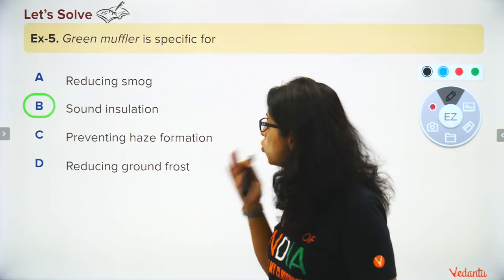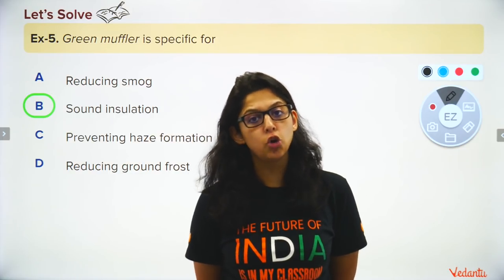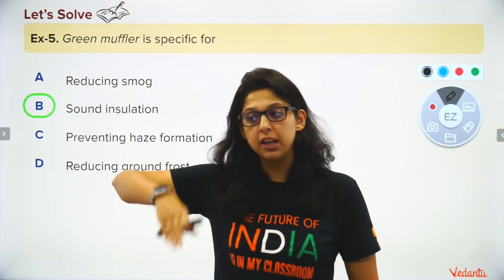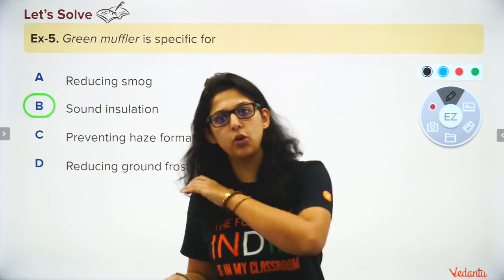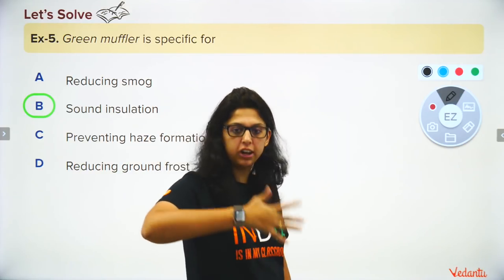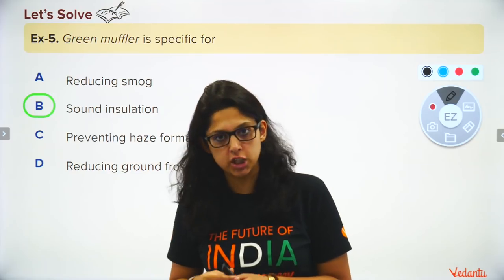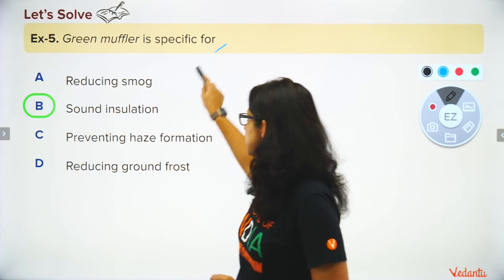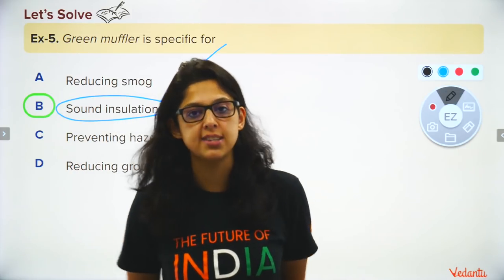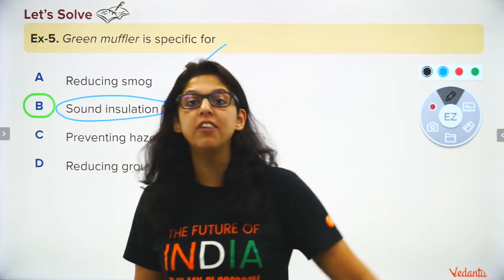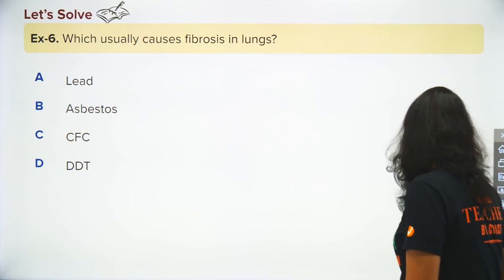Green muffler refers to rows of trees planted around housing societies or near highways to absorb sound — it's used for sound insulation to decrease ambient noise. Sound pollution is a major cause of hypertension and anxiety.